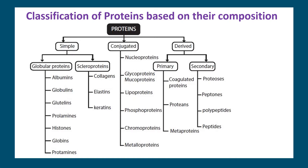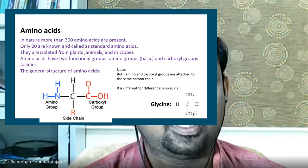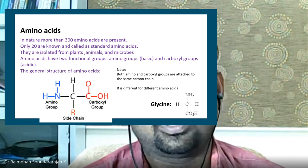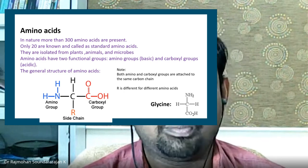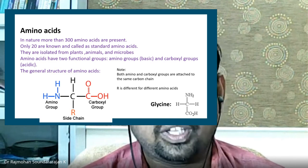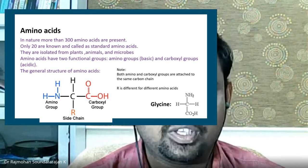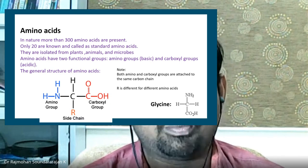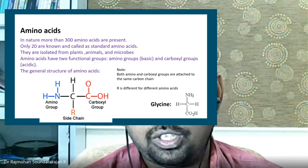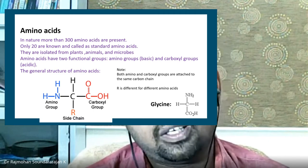Examples for globular proteins are albumins, globulins, glutelins, prolamins, histones, globins, and protamines. Scleroproteins — also a type of simple protein — include collagens, elastins, and keratins. Examples for conjugated proteins are nucleoproteins, glycoproteins, mucoproteins, lipoproteins, phosphoproteins, chromoproteins, and metalloproteins. Examples for primary derived proteins are conjugated proteins, proteins, proteons, and metaproteins, whereas secondary derived proteins include proteoses, peptones, polypeptides, and peptides.